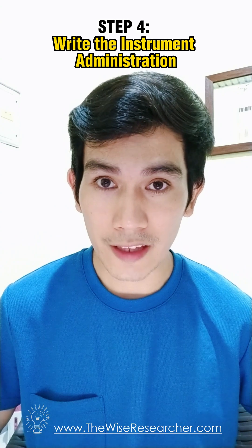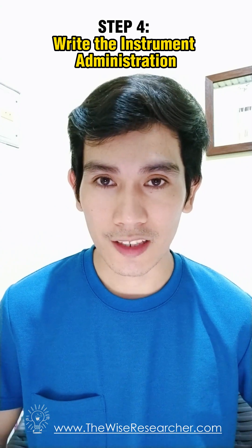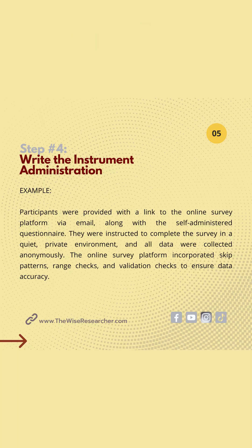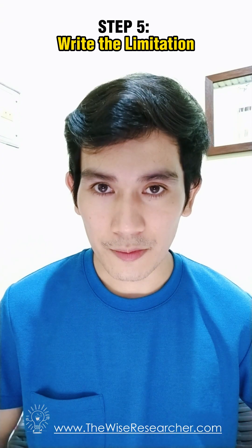Step number four: write the instrument administration. Participants were provided with a link to the online survey platform via email along with a self-administered questionnaire. They were instructed to complete the survey in a quiet, private environment, and all data were collected anonymously. The online survey platform incorporated skip patterns, range checks, and validation checks to ensure accuracy.